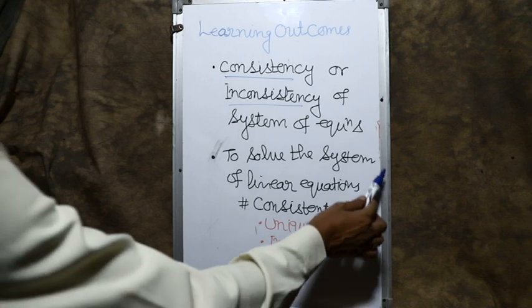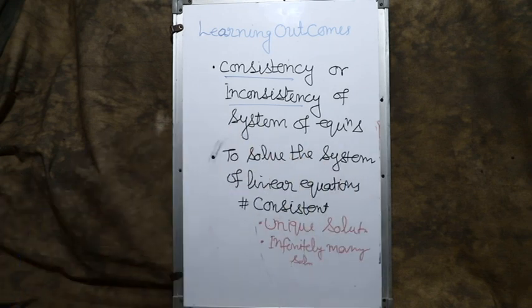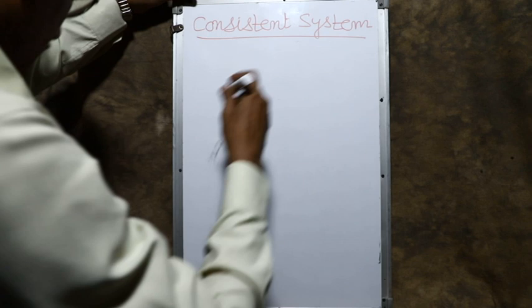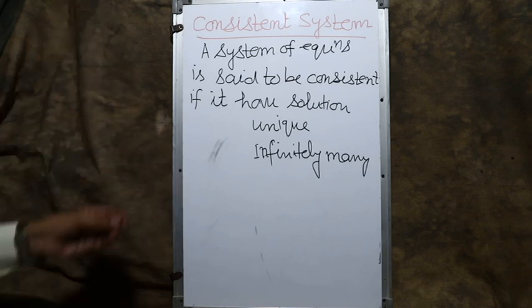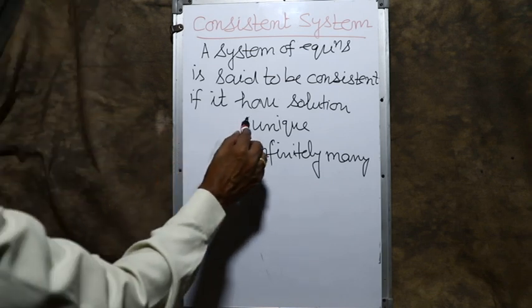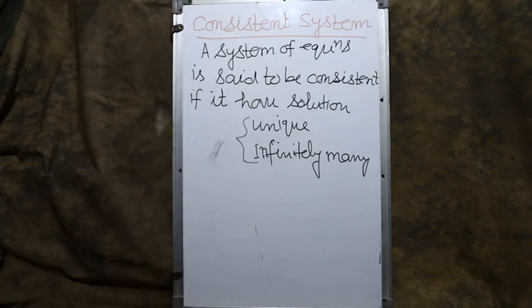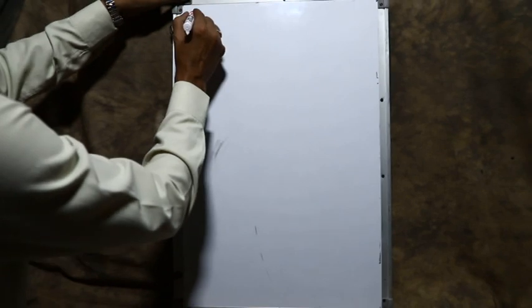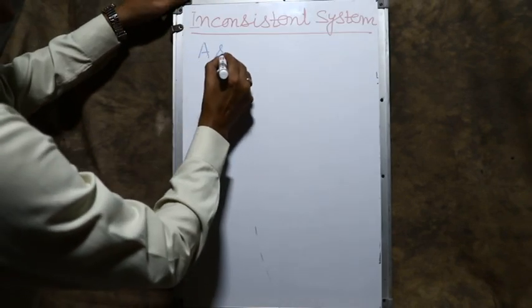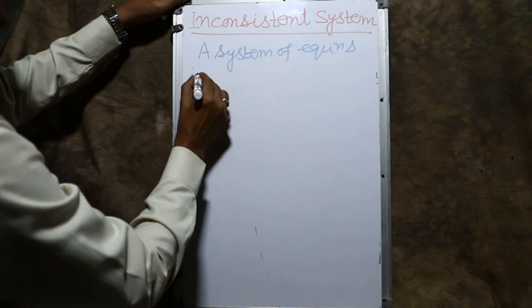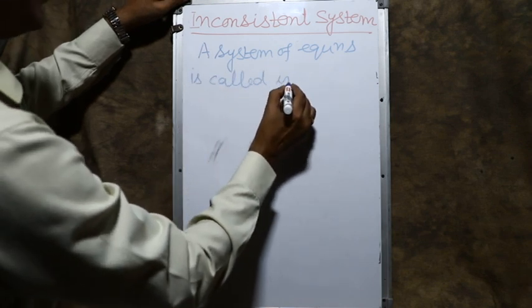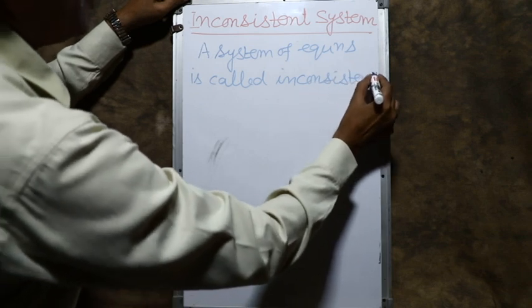Second, you can solve the system of linear equations if it is consistent, whether it has a unique solution or infinitely many solutions. A consistent system means a system of equations is said to be consistent if its solution exists — that solution may be unique or infinitely many, meaning one solution or more than one solution. An inconsistent system is one where the system of equations does not have a solution.